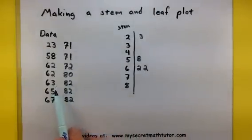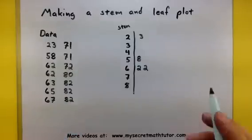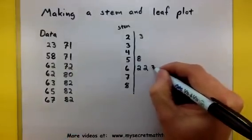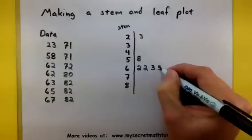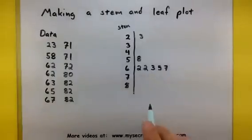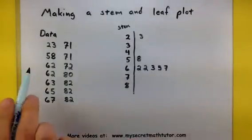So it looks like I also have a 63, a 65, and a 67. So 3, 5, and 7. All of these are my 60's.